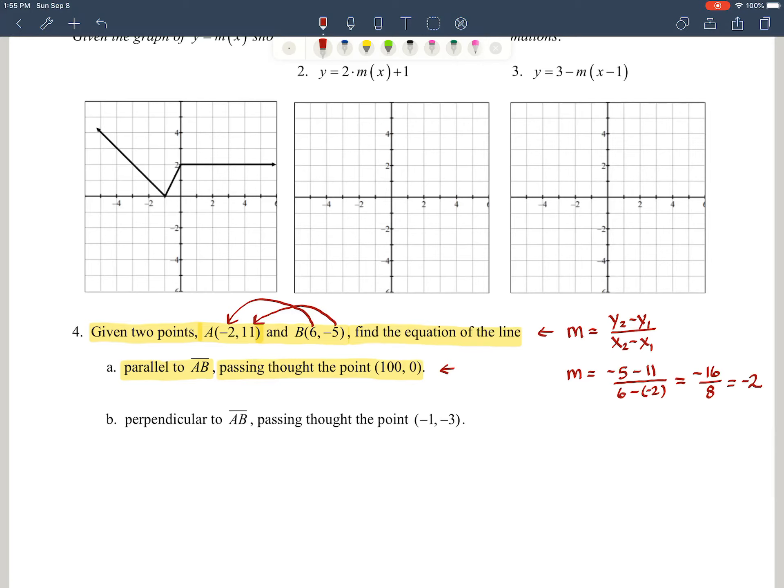So our slope for this first one should be negative 2. And we're just going to use our point-slope formula. So we're going to say here, and actually maybe I'll just write that on here so we remember it. It's y minus y1 is equal to m times the quantity of x minus x1.